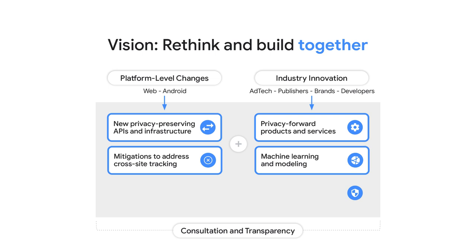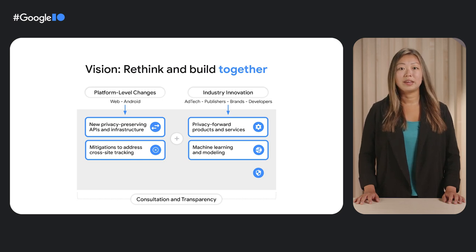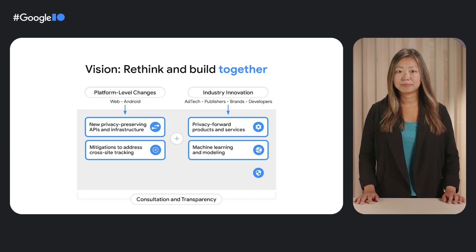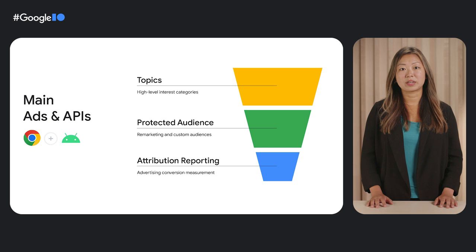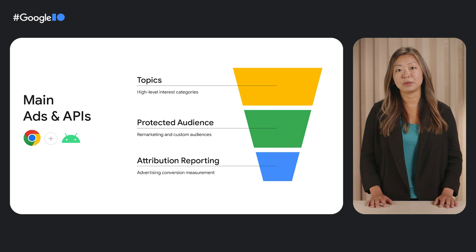The vision for Privacy Sandbox involves both rethinking and building together. We're rethinking Chrome and Android as platforms for privacy and developing new approaches like purpose-built technologies to support key use cases. And we're doing this in a transparent, open, and collaborative fashion, consulting with stakeholders from across the industry to ensure that this vision works for everyone. There are three main advertising-focused APIs being developed for both web and Android, and we generally expect they'll be most useful at different stages of the marketing funnel.